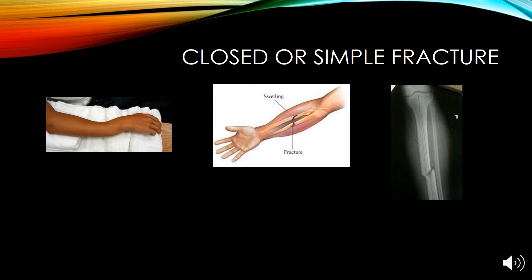In a closed or simple fracture, the break remains completely internal and does not protrude through the skin. This is simply a break in the bone without damage to the surrounding tissue. Any fracture that does not produce an open wound can be called a closed fracture.